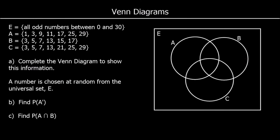Another question — this time we've got three circles, but we're doing the same thing. We want all odd numbers between 0 and 30 as our universal set. Set A is 1, 3, 9, 11, 17, 25, and 29. Set B is 3, 5, 7, 13, 15, and 17. Set C is 3, 5, 7, 13, 21, 25, and 29. In the middle of all three circles goes any number in A, B, and C — they've all got a 3, and nothing else is common to all three. So only 3 goes in the middle.